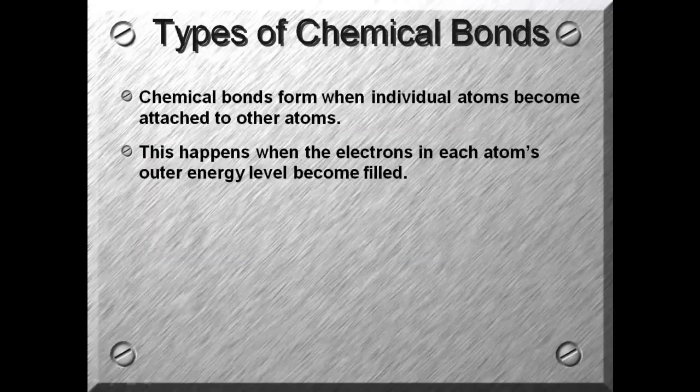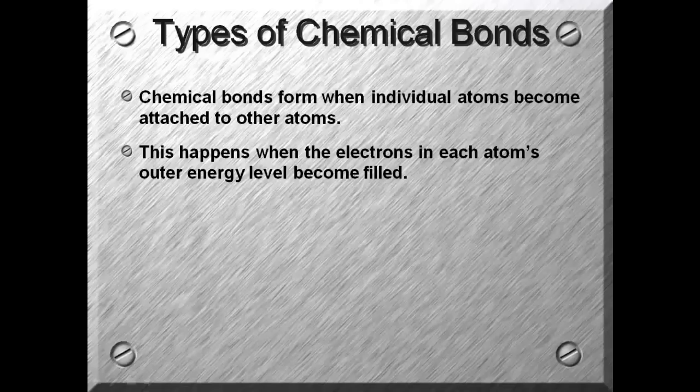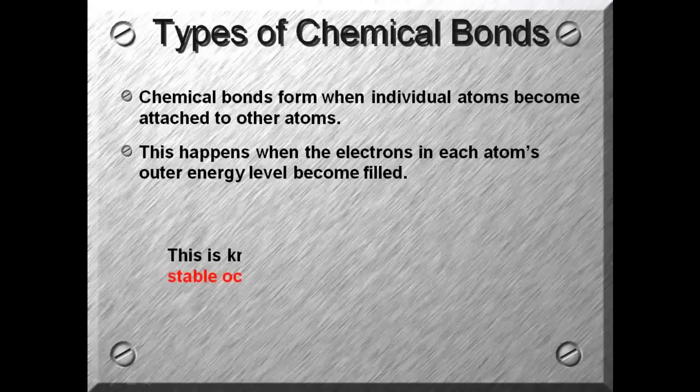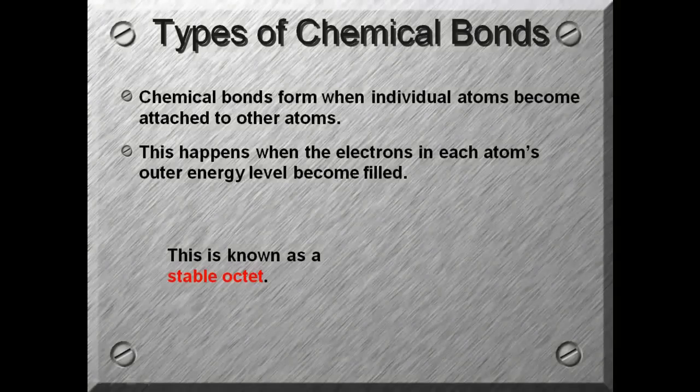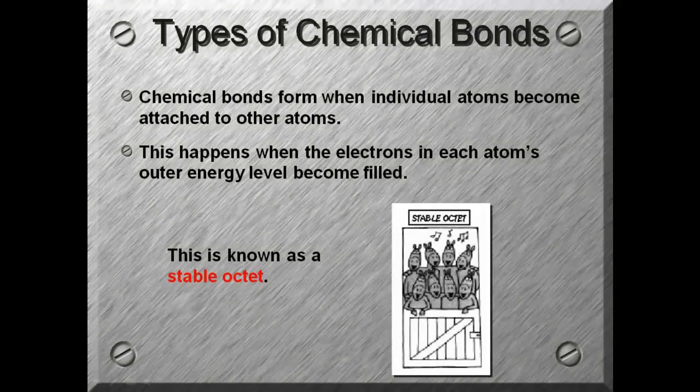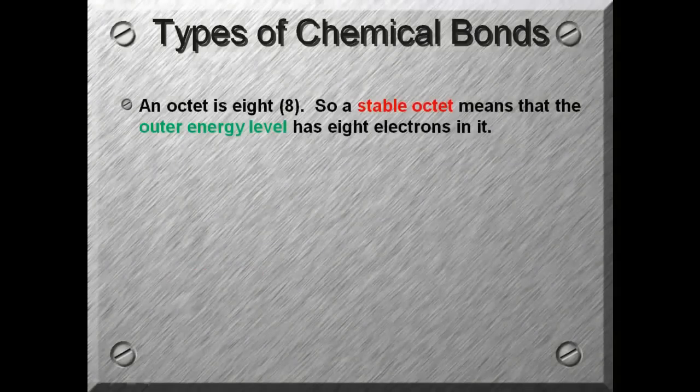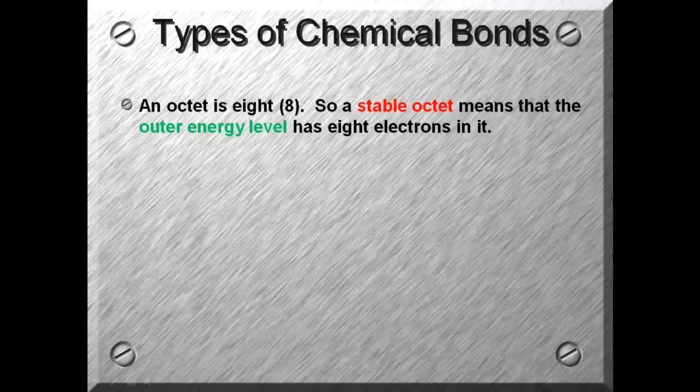Chemical bonds will form when individual atoms become attached to other atoms. This happens when the electrons in each atom's outer energy level become filled. The whole purpose of bonding is to create a stable octet in the outer energy level. An octet is 8, so a stable octet means that the outer energy level has 8 electrons in it.